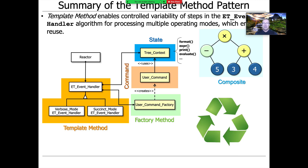To summarize: the template method pattern is applied here to give us controlled variability in our expression tree processing app via the ET event handler superclass and the handle input template method, thereby making it possible to have multiple operating modes which enables systematic reuse — a very clean, concise way of doing those things. Looking at this diagram, you can also see that template method fits in with all the other patterns: factory method to make the user command, the command pattern, the state pattern, the composite pattern, and so on. Always remember that patterns are not islands — patterns are social, they like to interact with other patterns. If you can really understand that, you'll be well on your way to mastering what patterns are and how to apply them effectively.